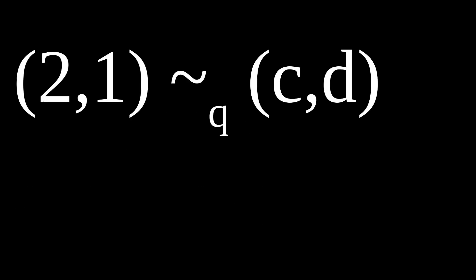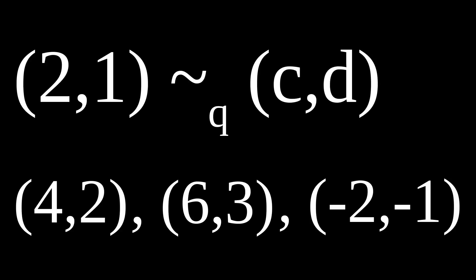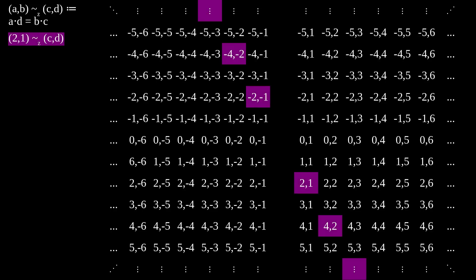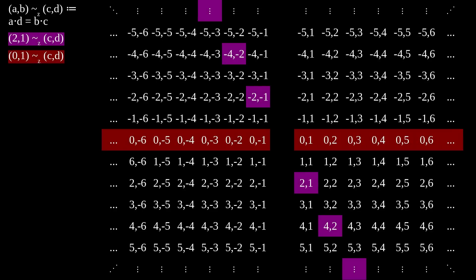As an example, pairs that are equivalent to 2,1 include 4,2, 6,3, but also negative 2, negative 1. We can list these pairs in the grid once again. Note that the middle column is empty because b isn't allowed to be 0. The pairs equivalent to 2,1 lie here, the ones equivalent to 0,1 here, and if I color the entire thing—whoa, it can be a little hard to see due to the fact that the colors become similar to each other when you go further left or right. Maybe keep that one in mind. But equivalence classes all lie on lines through the center.